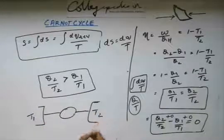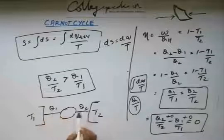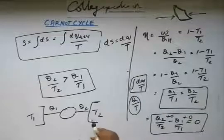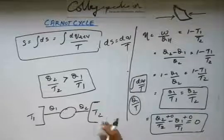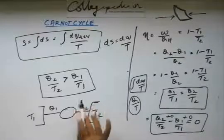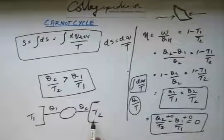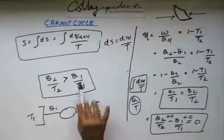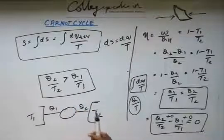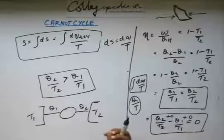And this sink gained energy in the form of heat as Q2. So Q2 by T2 is the entropy gained by the sink. So Q1 by T1 is the entropy lost by the source, Q2 by T2 is the entropy gained by the sink.